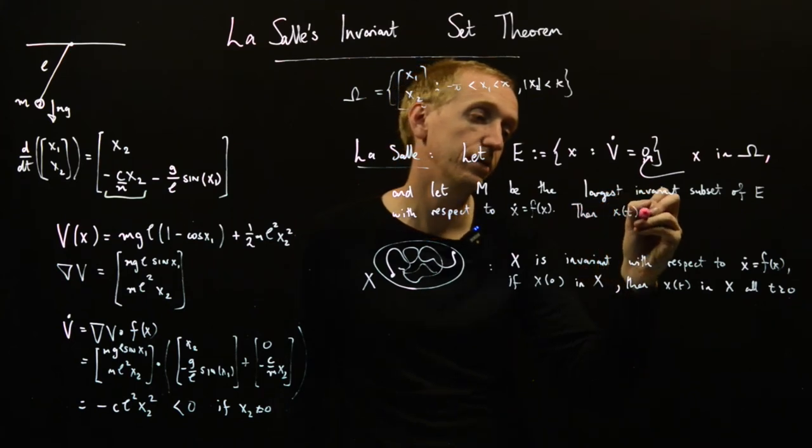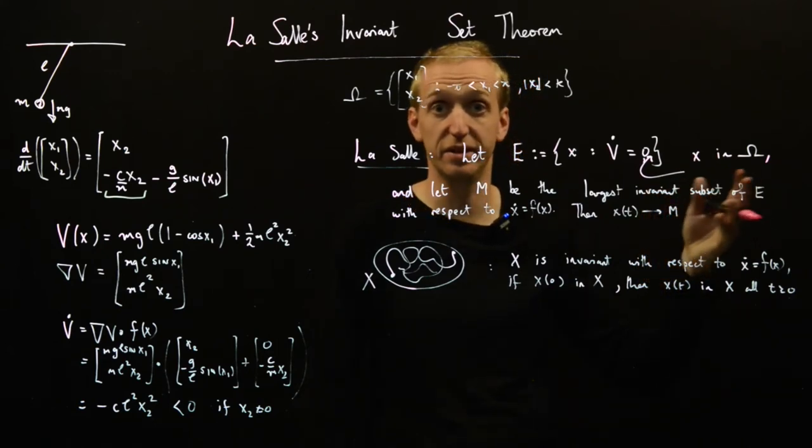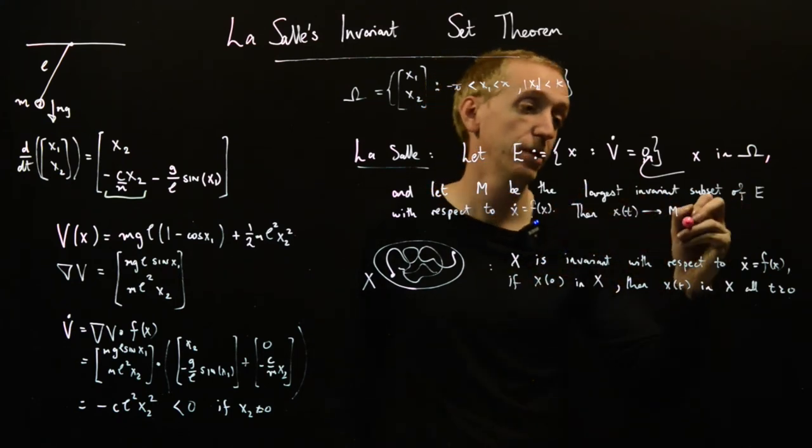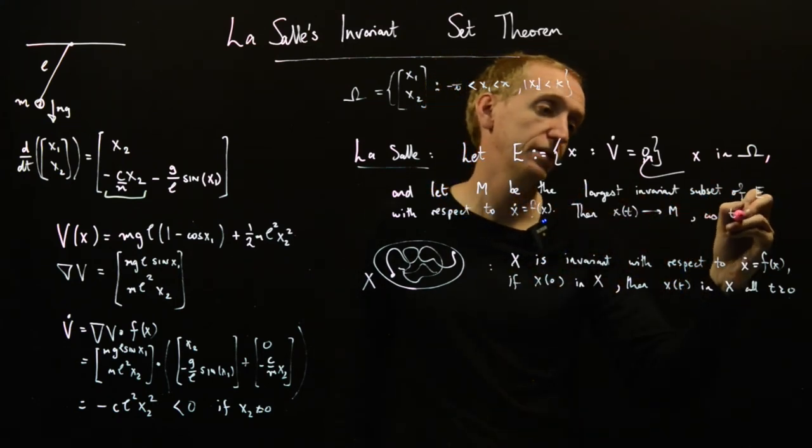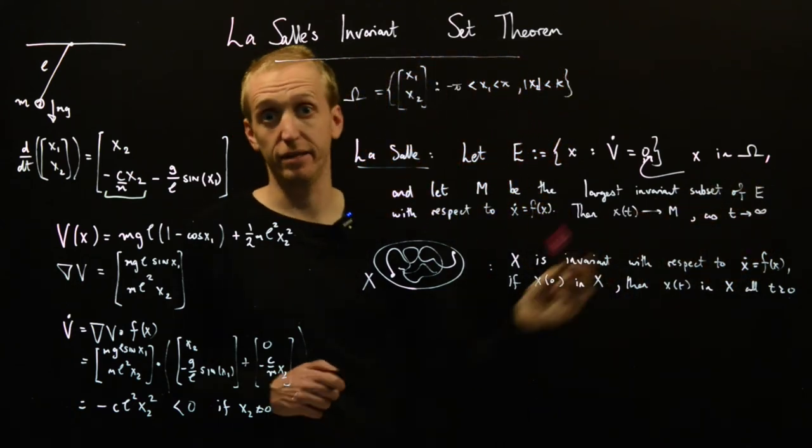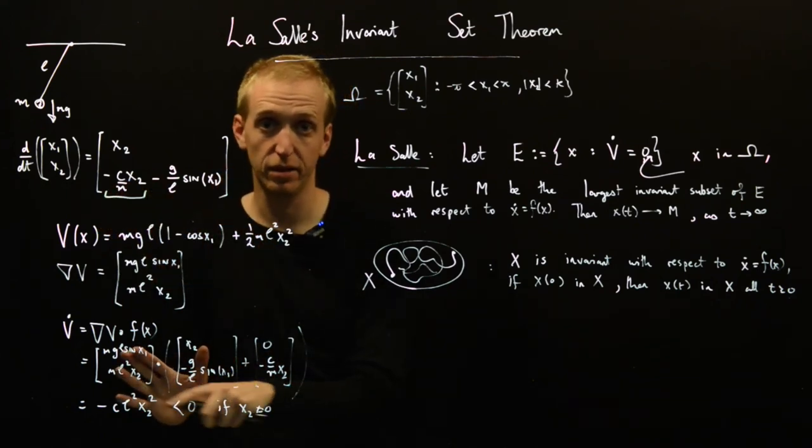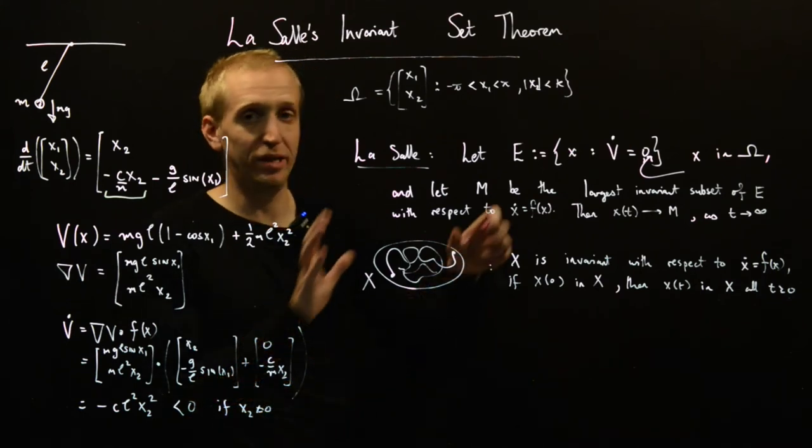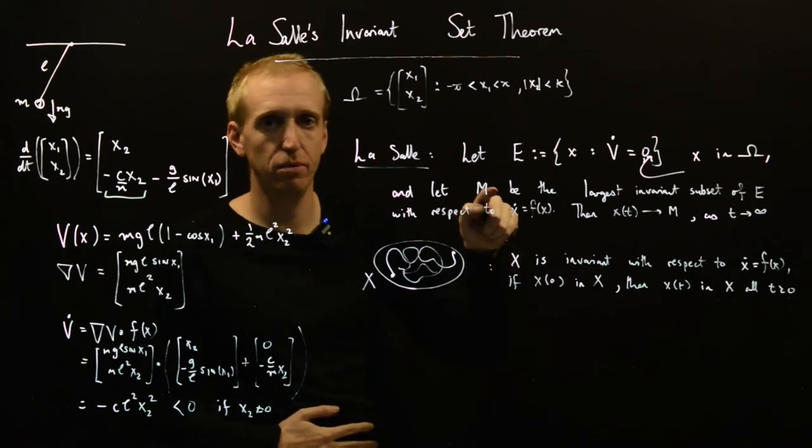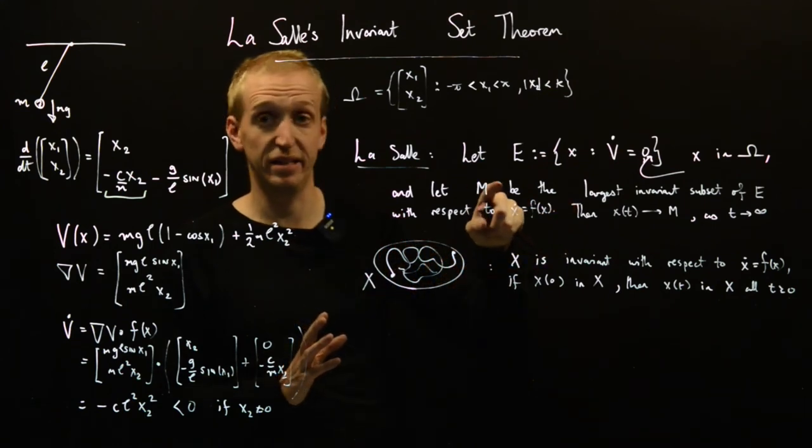Then x(t) tends to a point in M, or it tends to the set M. It doesn't have to be a point, but x(t) will end up in this set M as t goes to infinity. And the point here is that when we analyze these types of systems, where we don't satisfy this strict inequality.